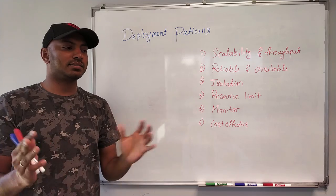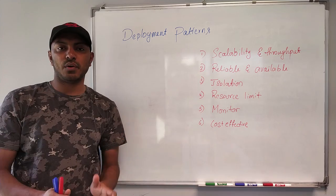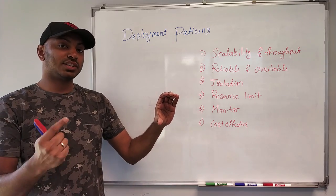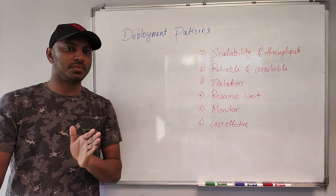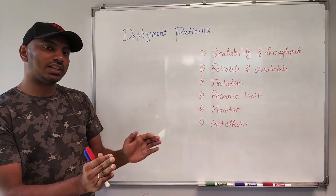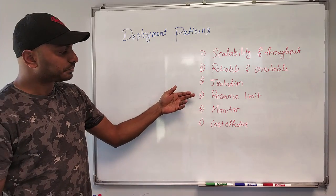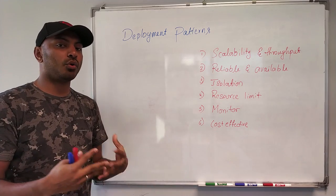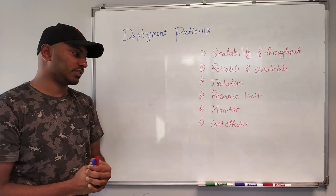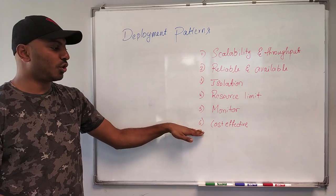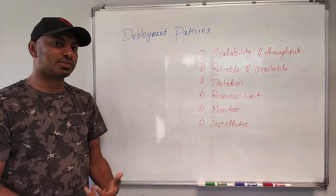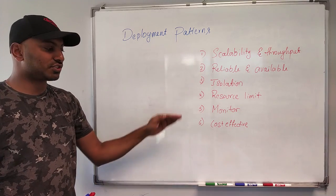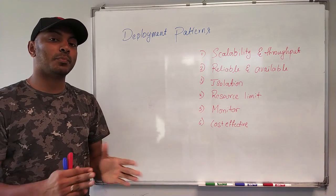We need pure isolation around these microservices when we deploy them. The fourth goal is resource limits — we can't just let services consume whatever resources they want on the server. For example, if a microservice is specified to use one CPU and 2 GB of RAM, it should only be allowed to consume that much, not beyond. The fifth goal is monitoring — we need to monitor all the deployments and services running on the servers. Finally, deployment should be cost effective, utilizing resources to the maximum extent and keeping cloud or server costs low.